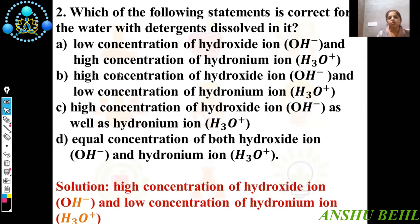Second question: Which of the following statements is correct for water with detergents dissolved in it? Water having detergent dissolved in it has a more basic character. So the concentration of hydroxide ion OH⁻ will be more as compared to hydronium ion H₃O⁺. So the correct option is high concentration of hydroxide ion and low concentration of hydronium ion. Option B is the correct choice.